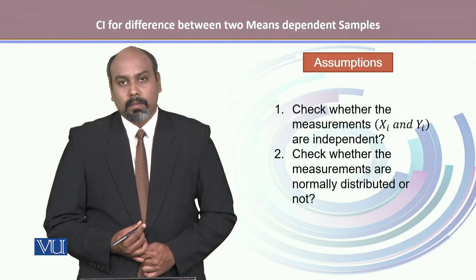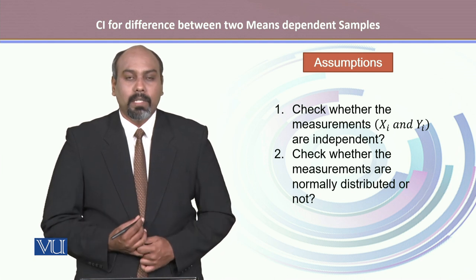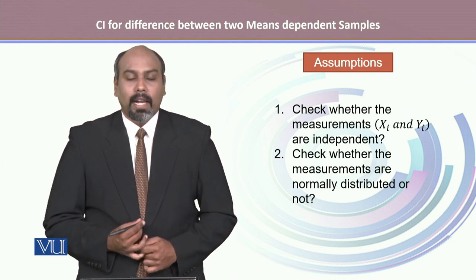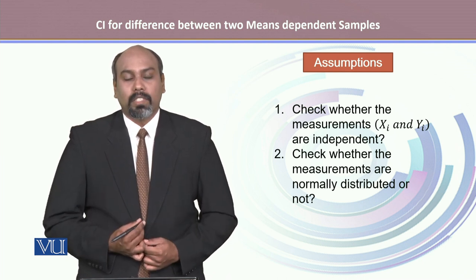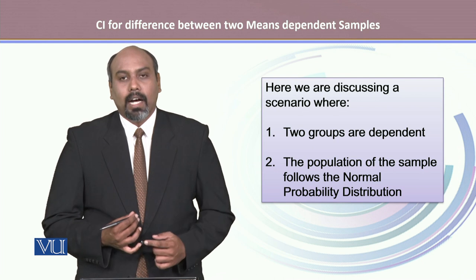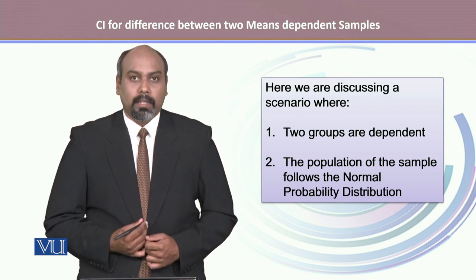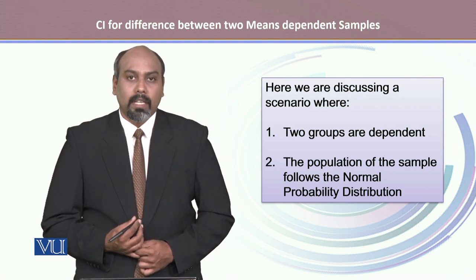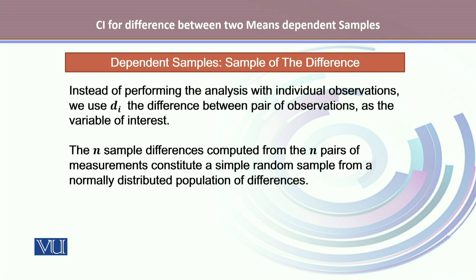We check for certain assumptions. The first assumption is whether the two samples are independent or dependent, and the second is whether the distribution of the differences is normal or not. Here we are discussing a special scenario where the two groups are dependent and the population of the sample differences is normal. Instead of performing the analysis with individual observations, we use Di — the difference between a pair of observations — as the variable of interest. The sample differences are computed from N pairs of measurements that constitute a simple random sample from a normally distributed population of differences.